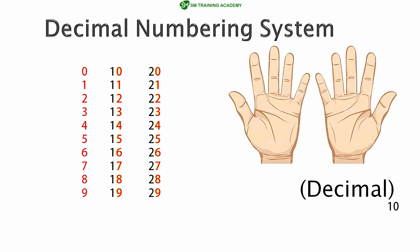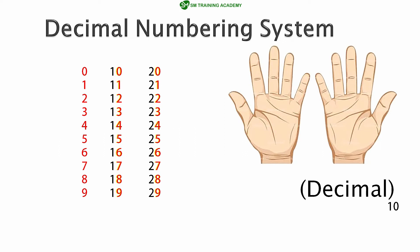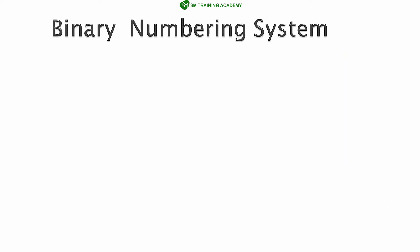Humans can easily recognize the decimal numbering system. Coming to the binary numbering system — all these systems are representations; we are just representing one particular number in various numbering systems. Here we are going to represent the same numbers using the binary numbering system. Similarly, we have hexadecimal representation, octal representation, etc., which we will see later. For now let us understand what the binary numbering system is and why it is widely used in computers for storing numbers.